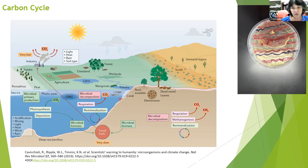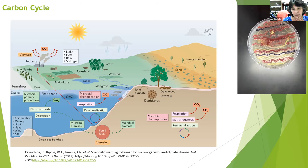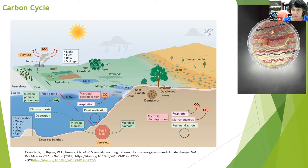Basically the same cycle happens in a terrestrial environment where plants are the primary producers, and then the decaying matter is decomposed by microorganisms — they respire CO2, or depending on the environment, they release methane gas through methanogenesis.